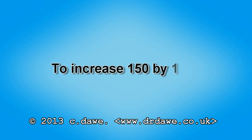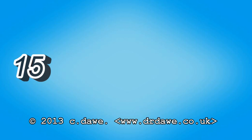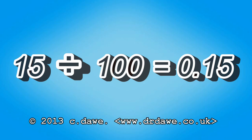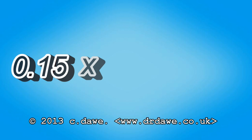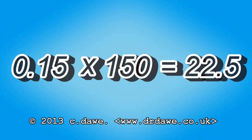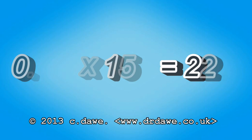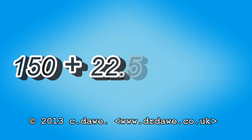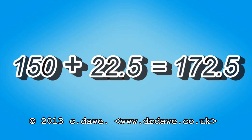To increase 150 by 15 percent: 15 divided by 100 is 0.15. 0.15 multiplied by 150 is 22.5. 150 add 22.5 is 172.5.